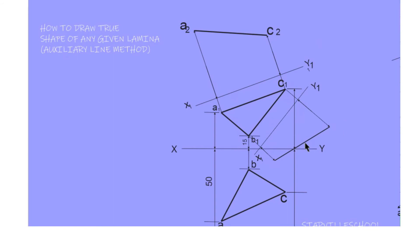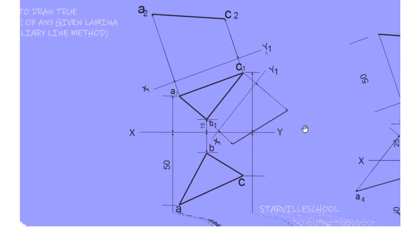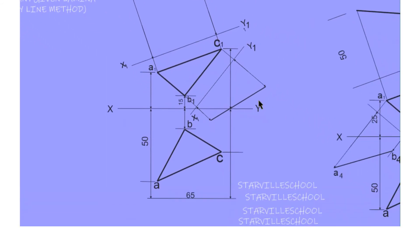This now represents the true length of side B1C1. We will name the points B3 and C3.